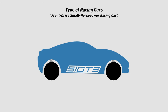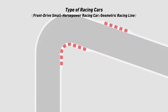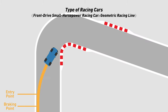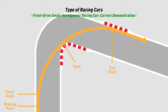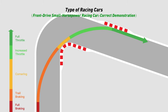Third, the racing line is determined by the type of racing car. Generally speaking, the front-drive small horsepower racing car has the engine and driving wheels in front, and its acceleration ability is weak. So for these cars, we have to pay special attention to reducing the speed loss in the corners. This type of car should choose the geometric racing line to get the maximum turning radius, allowing the car to lose as little speed as possible in the corners.